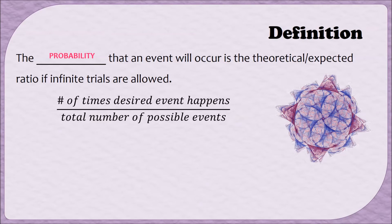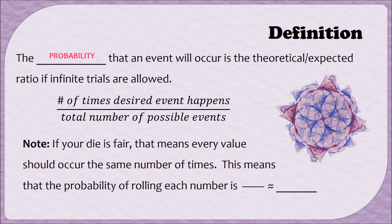The way we'll find the probability is by dividing the number of times the desired event happens by the total number of possible events. For example, if we think about rolling the die and it's fair, every number should occur about the same number of times. Since there are six sides to the die and each side has a different number, the probability of rolling each number is one out of six—one because there was only one side with each number, and six because there were six sides total. This would be about 0.167.